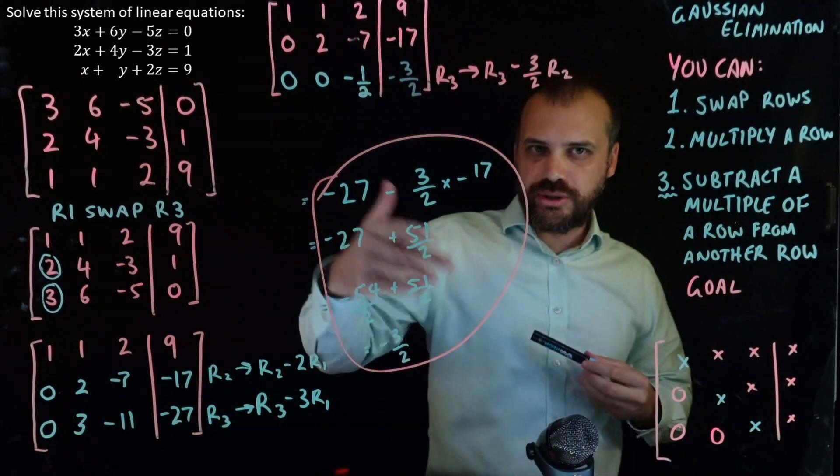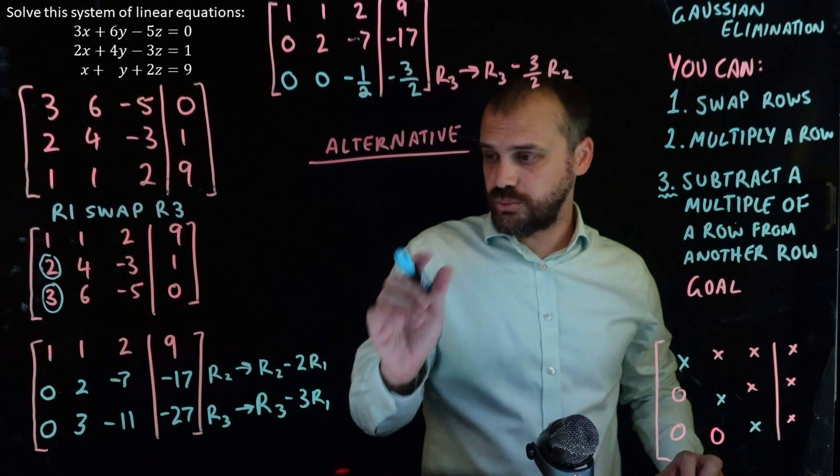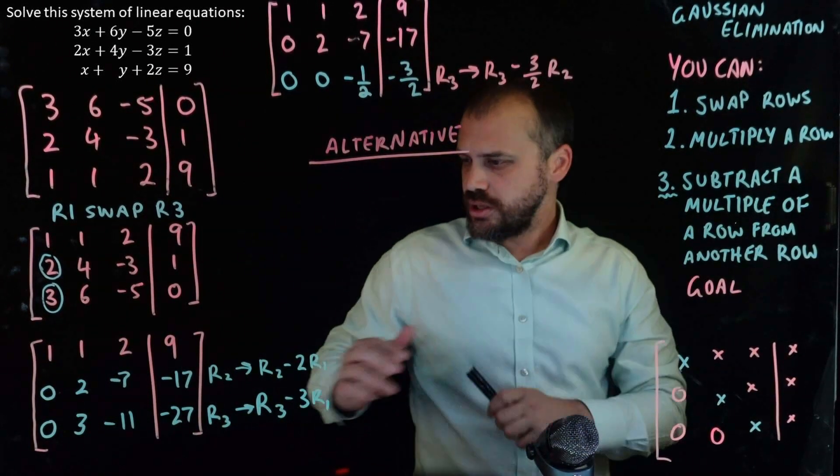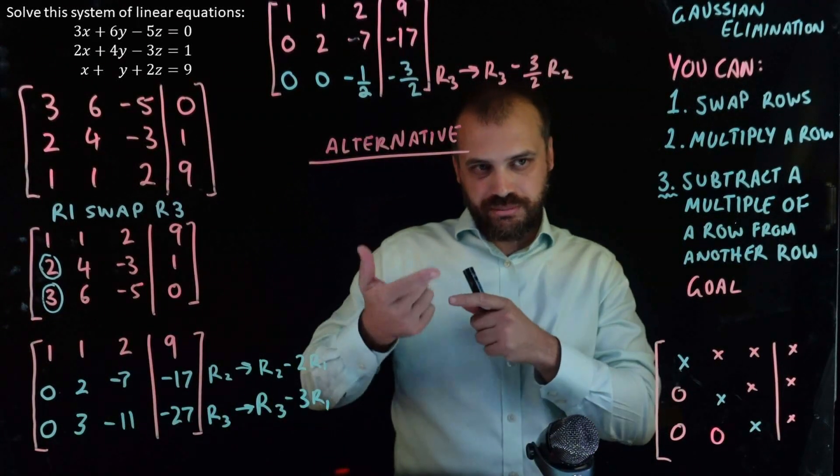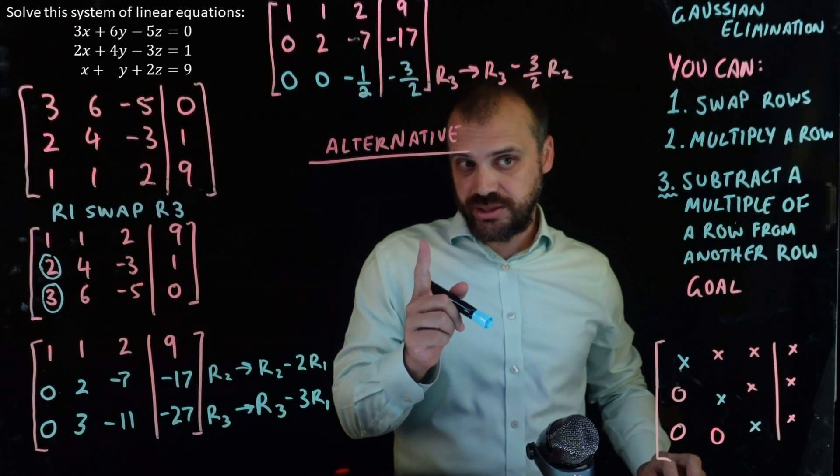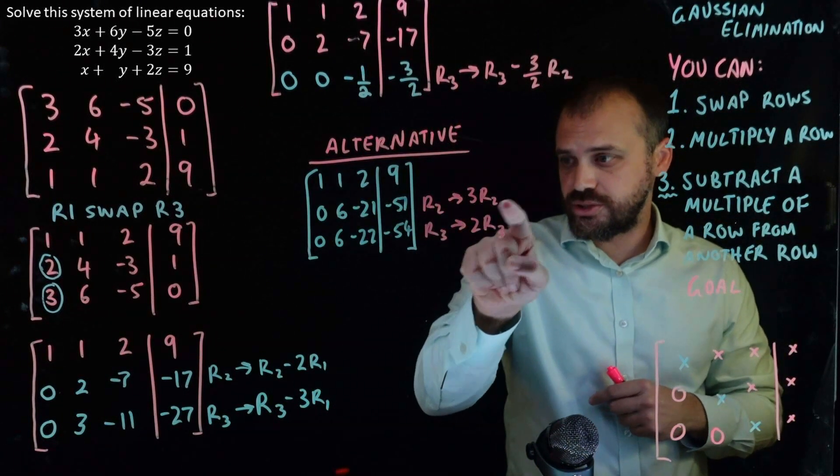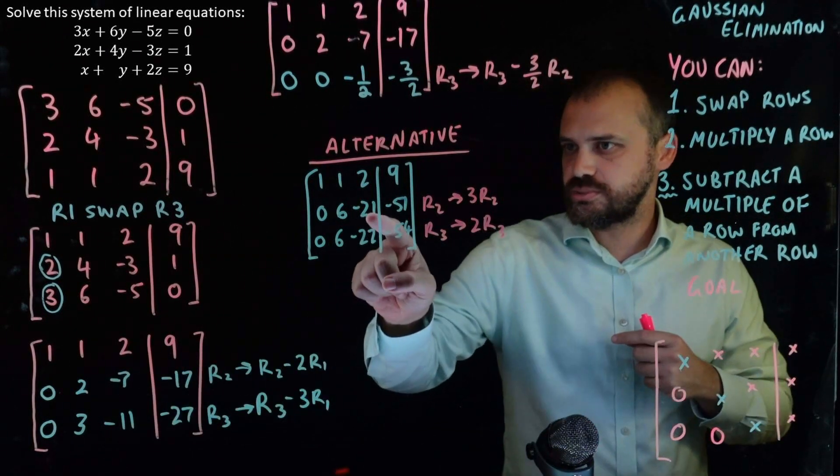All right, now that's not the only way you could have done all of this. An alternative method would have been to use this rule here, multiply rows. You could have taken row 2 and row 3 and multiplied them by 2 and 3 respectively, like that. So, row 2 is 3 times row 2 now. So, you can see 2 times 3 is 6. Negative 7 times 3 is negative 21.